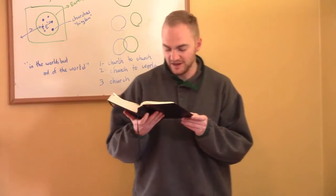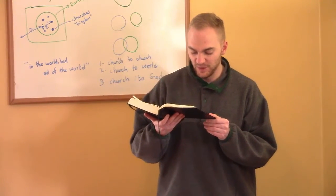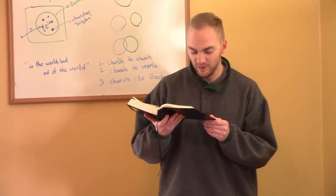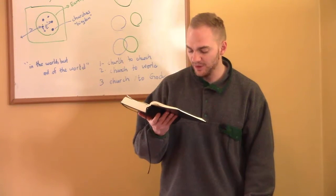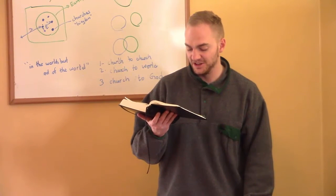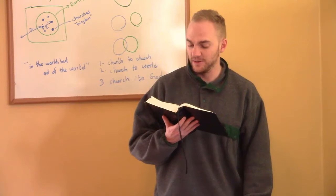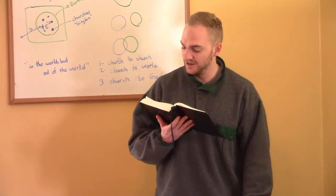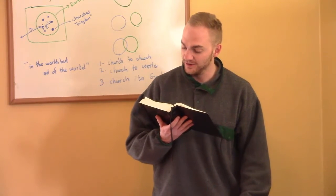Then all the elders of Israel gathered together and came to Samuel at Ramah, and said to him, Behold, you are old, and your sons do not walk in your ways. Now appoint for us a king to judge us like all the nations. But the thing displeased Samuel when they said, Give us a king to judge us. And Samuel prayed to the Lord. And the Lord said to Samuel, Obey the voice of the people in all they say to you, for they have not rejected you, but they have rejected me from being king over them.